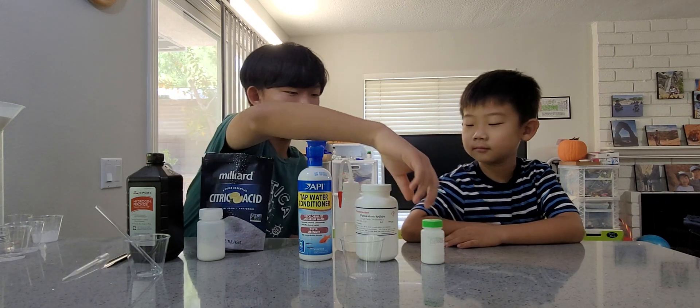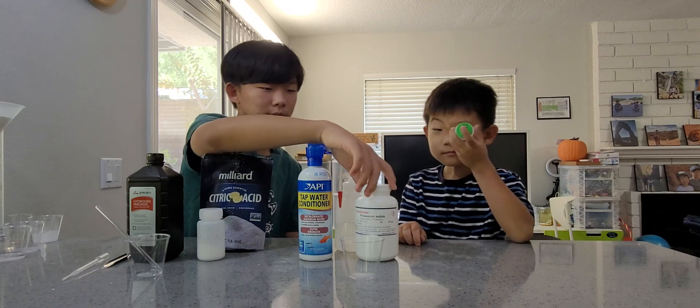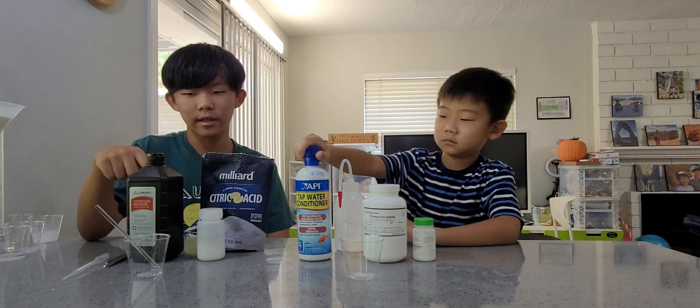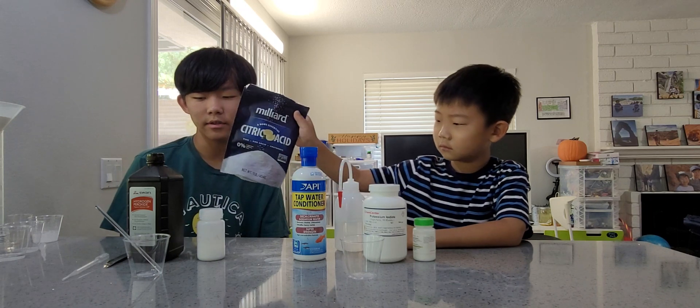So here are the five major ingredients you need. The first one is starch, potassium iodide, sodium thiosulfate, citric acid, and hydrogen peroxide, specifically 3%.